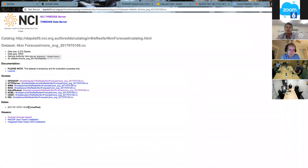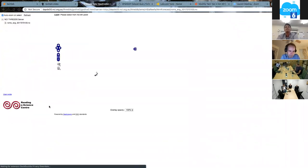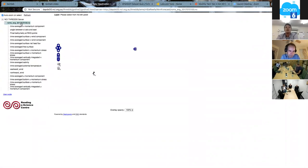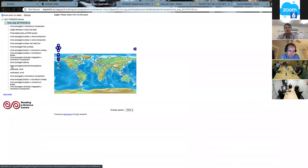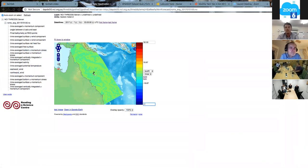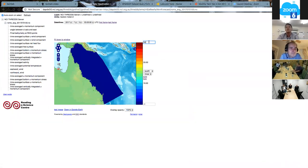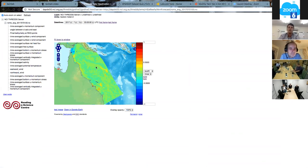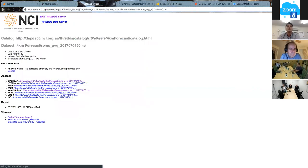I'll just go through a couple. If we want to quickly visualize the data, we can use the Godiva2 data viewer. Here we have all the different variables contained in the file. We can click on one and it can give you a quick preview of the data.